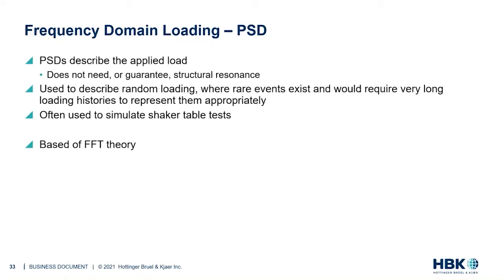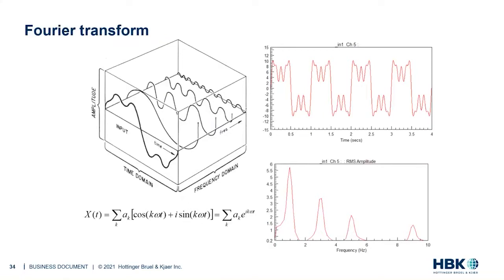PSDs are often used to simulate shaker table tests. The requirement that the PSD is valid — based on FFT theory — still stands. For those who have forgotten Fourier transforms: on one axis is amplitude, on another the time domain, and the frequency domain behind it. A time domain signal is built of nothing but sine waves — add them together in the right ratios and you approximate any waveform. Frequencies of 1 Hz, 3 Hz, 5 Hz, and 9 Hz can all be present simultaneously. A Fourier transform takes the time domain signal and converts it into the frequency domain.